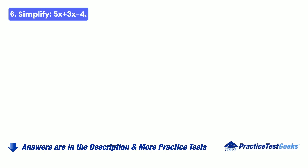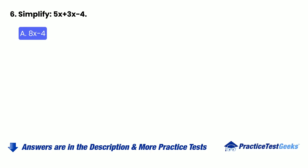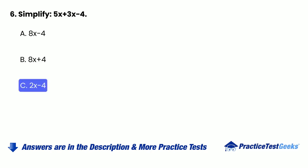Question 6: Simplify 5x + 3x − 4. A. 8x − 4. B. 8x + 4. C. 2x − 4. D. 5x − 4.